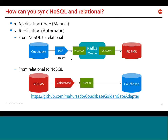A common question is how to keep relational and NoSQL synchronized. We've seen customers use Kafka as a way of streaming data to Couchbase or streaming changes back to the RDBMS. For those using Oracle or other relational products with gateway products like Golden Gate, customers will build a handler that automatically takes changes from the transaction log and moves them to Couchbase, either in batch or near real time.